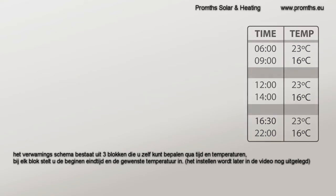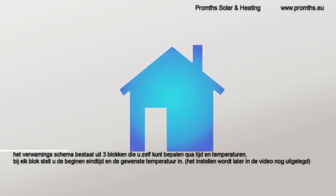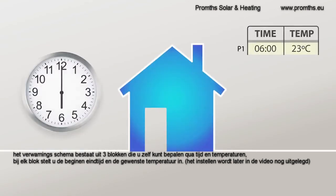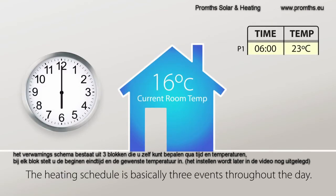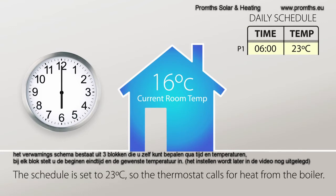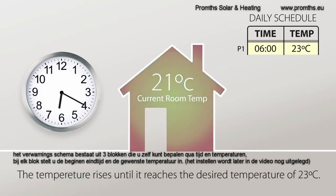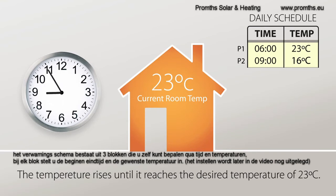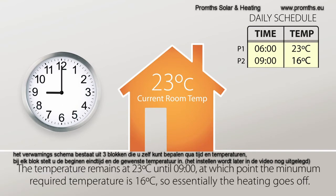At 6 a.m. the current room temperature is 16 degrees. Program 1 is the first on time and temperature. The temperature is set to 23 degrees, so the thermostat calls for heat from the boiler. The temperature rises until it reaches 23 degrees. Program 2 is the off time and temperature. At 9 a.m. the minimum temperature required is 16 degrees, so essentially the heating goes off.